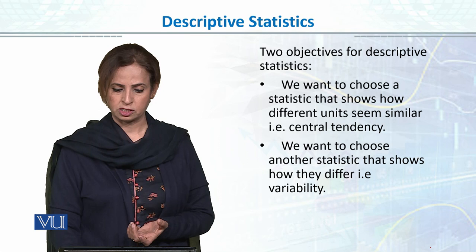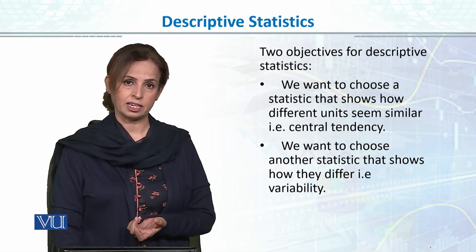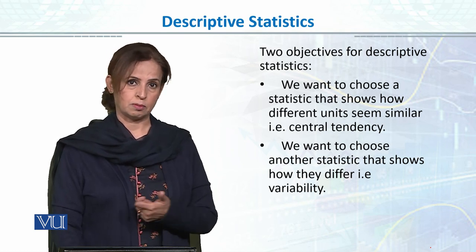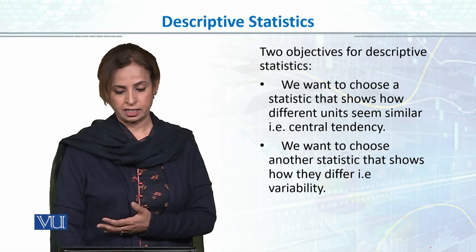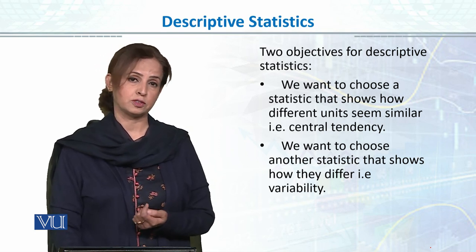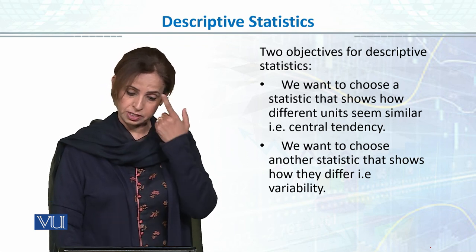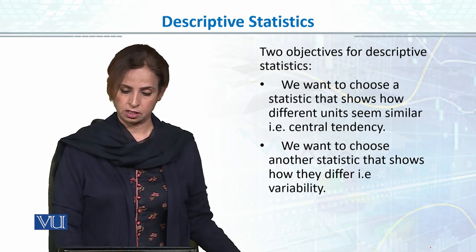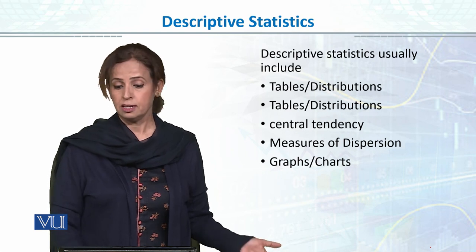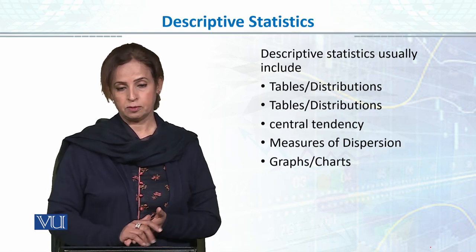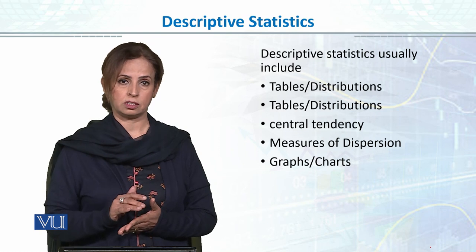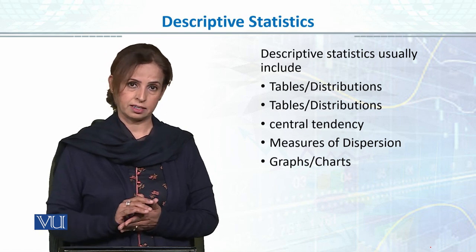Here I have told the definitions which we have covered before. Summarize, organize, and present. We have the measures of central tendency, the measures of dispersion, the measures of graphs to present it and we can explain it in frequency distribution. So this is what descriptive statistics usually include at undergraduate level.